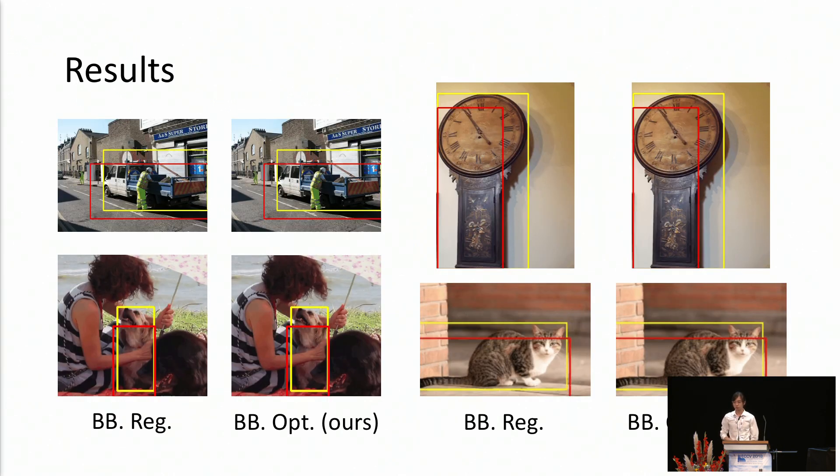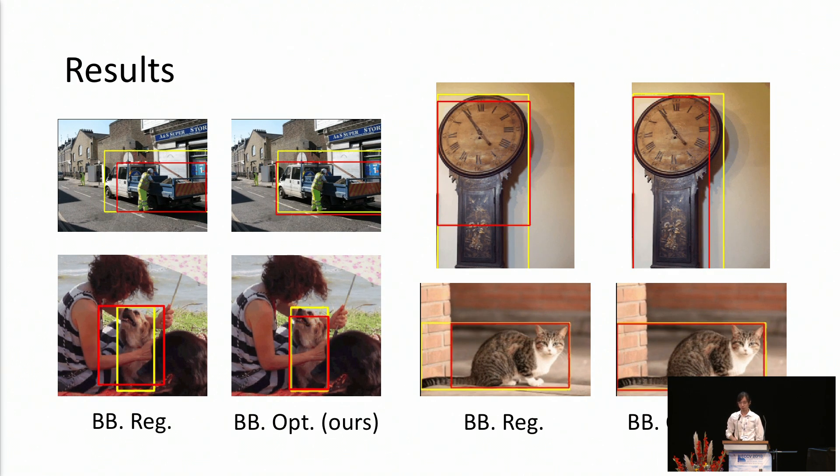Let's see some qualitative results. On the left, we show the result for the bounding box regression. We find that it sometimes gets stuck at some sub-optima. However, our bounding box optimization consistently finds the best localized one.